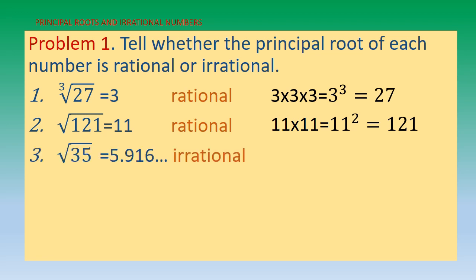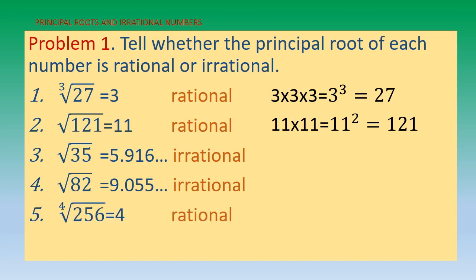Number three: √35 ≈ 5.916. This is an irrational number — there is no whole number result for this. Number four: √82 ≈ 9.055, which is also irrational; you can find this on your calculator. Number five: the fourth root of 256 = 4, which is a rational number because 4 is a whole number, and 4×4×4×4 = 4⁴ = 256.